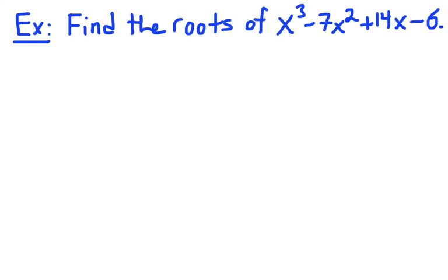Alright, so the way we start is we always look, first of all, we look for the constant. So if you look here, my constant is negative 6. So what we want to do is list out the factors of negative 6. So those are the possible factors of this cubic.